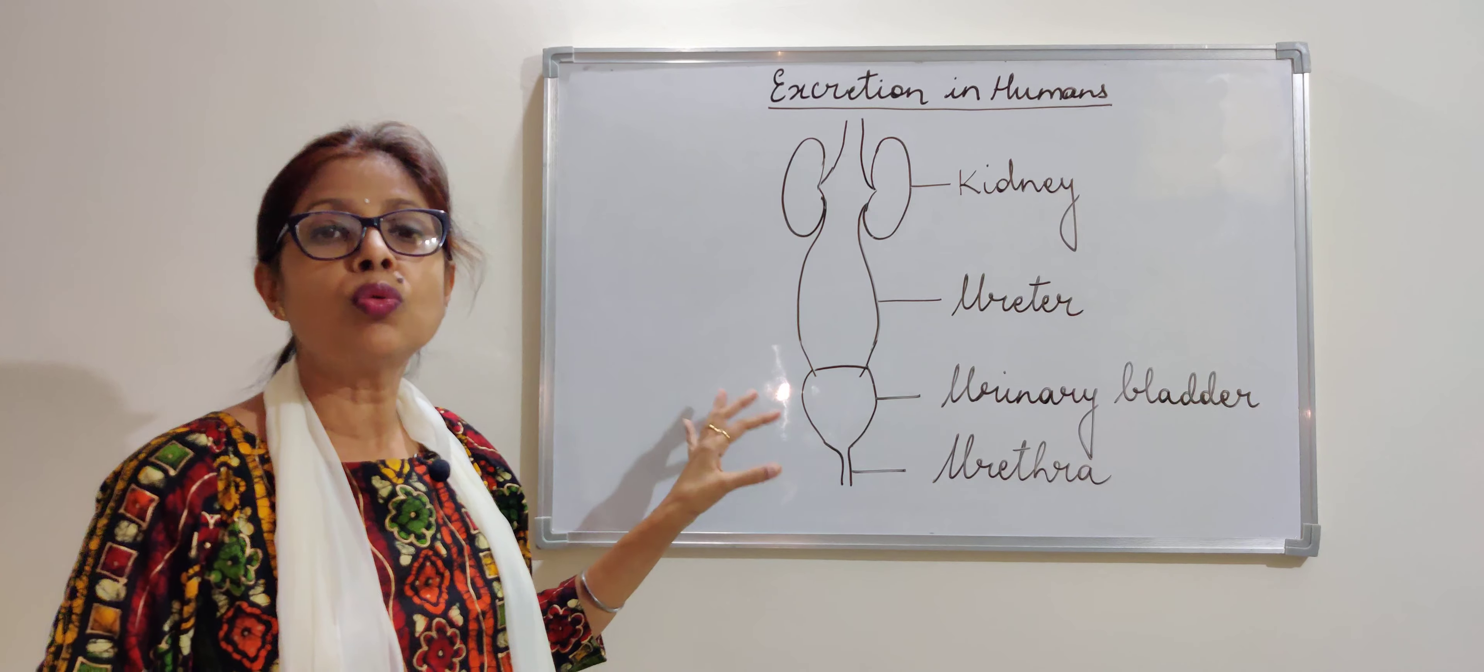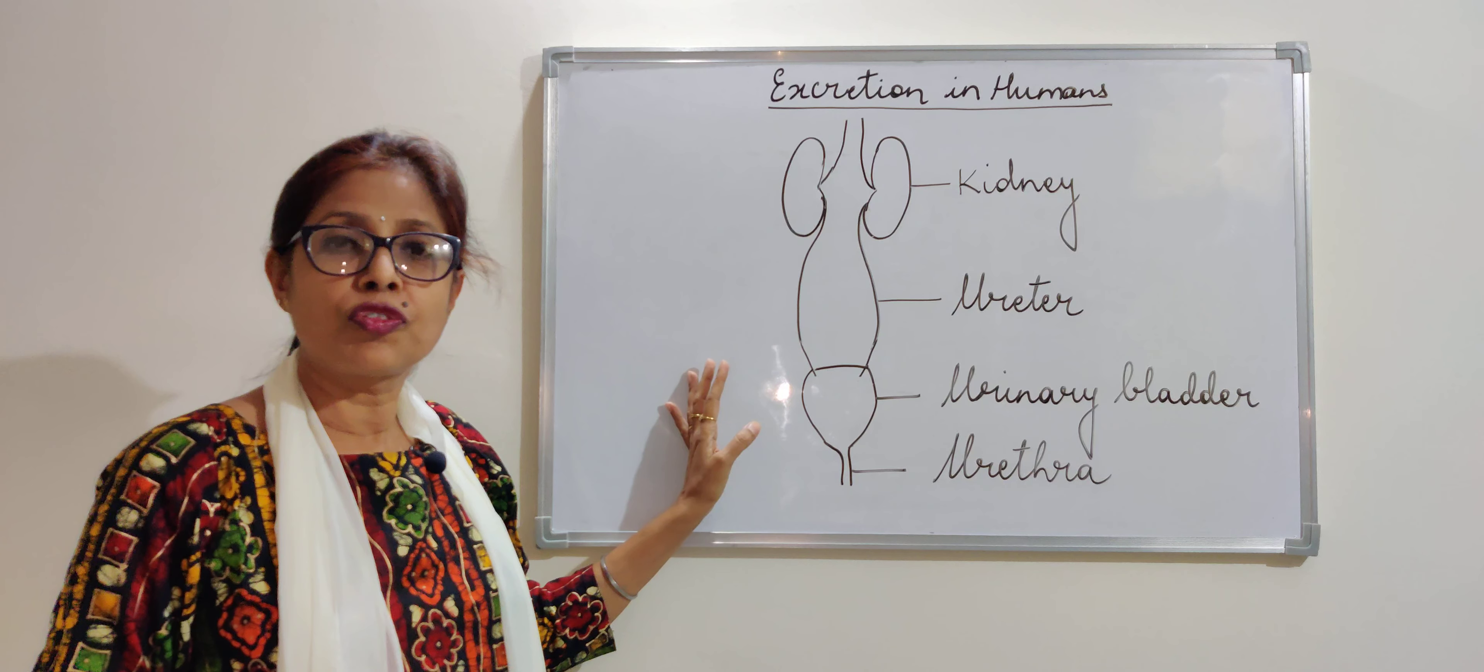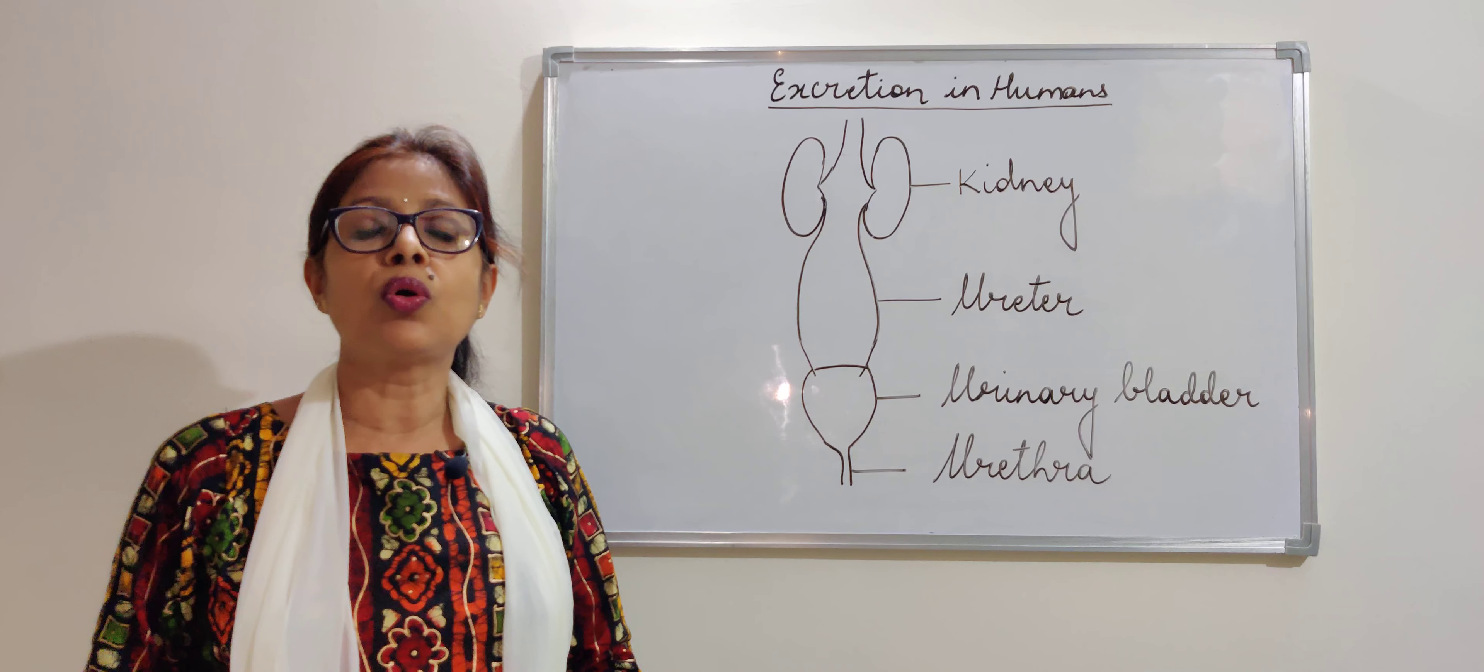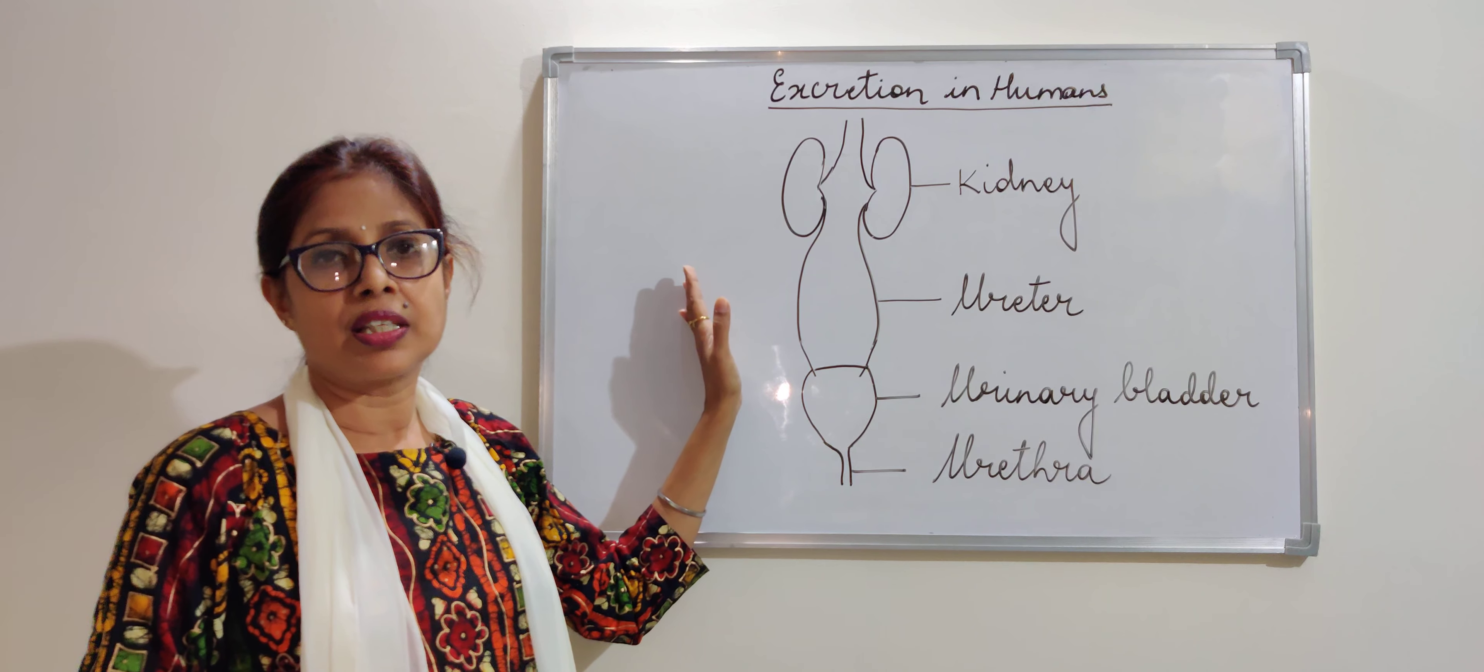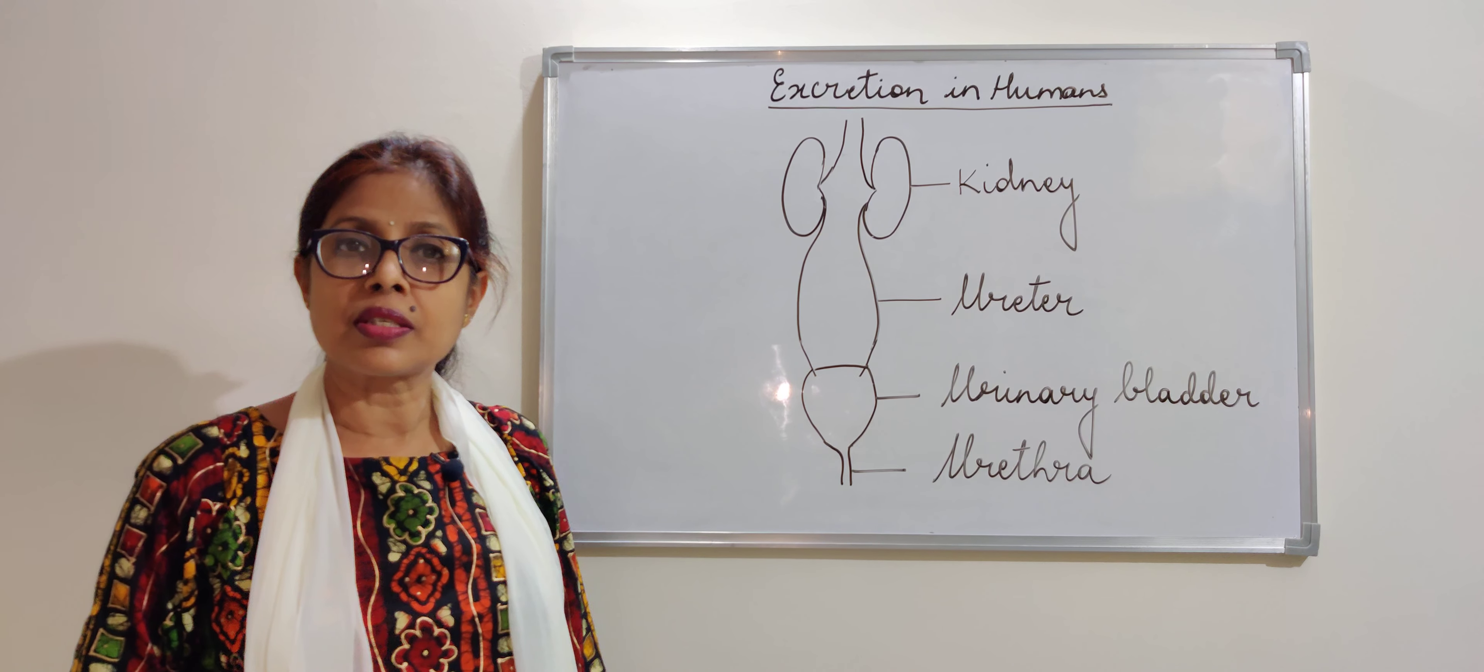As you can see, I have drawn an outline of the excretory organs of humans. In case of humans, we have a pair of kidneys which is situated just below the lower abdomen. We see one left and one right kidney. From each kidney, you can see there is a tube called the ureter which passes.